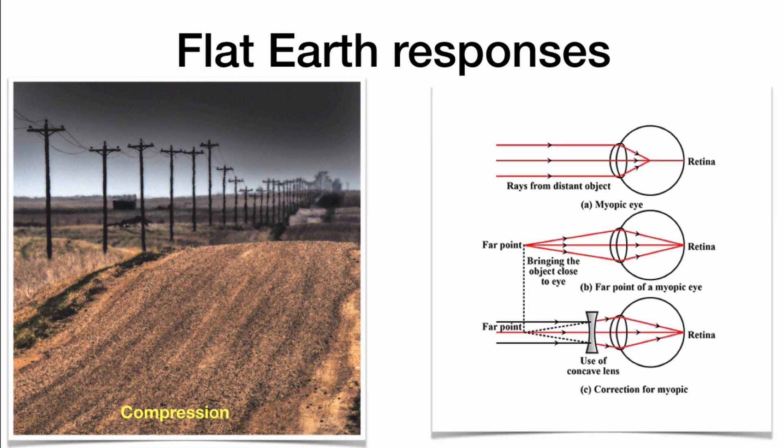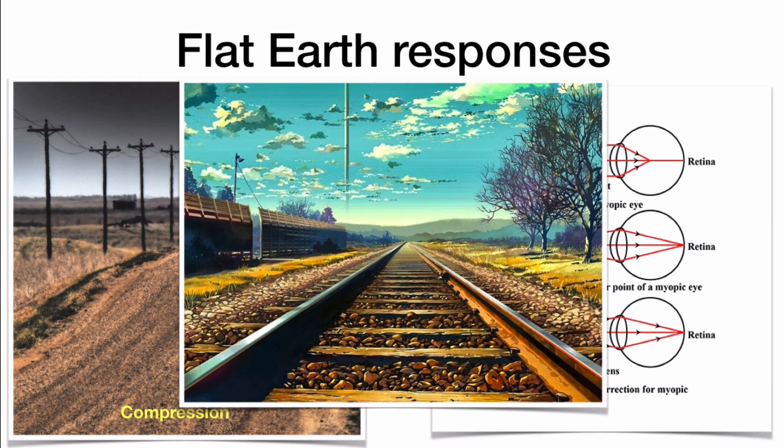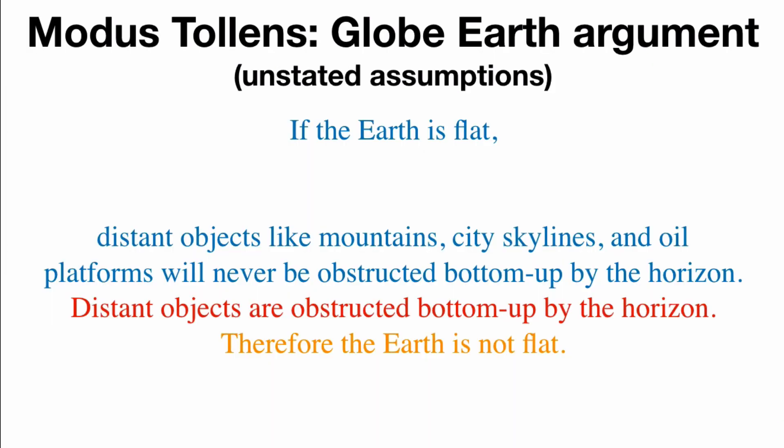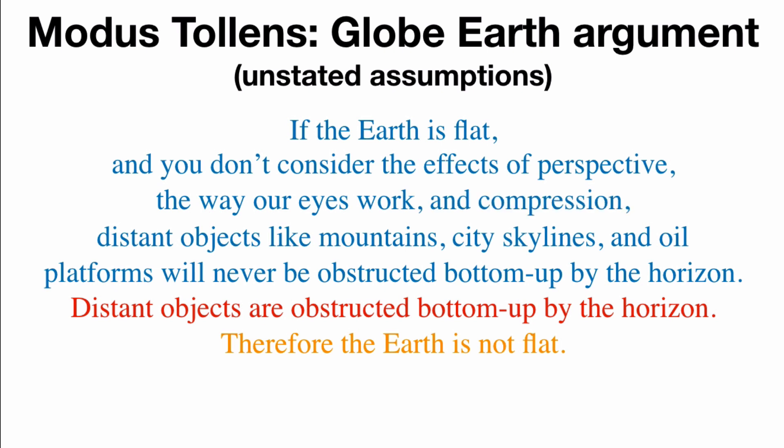And then of course, there's the various ways that the eye works. So you could talk about how images are formed using the human eye. And you can also talk about the rules of linear perspective with the vanishing point and the horizon line. So it turns out that there are some unstated assumptions for this version: if the earth is flat and you don't consider the effects of perspective and the way our eyes work and compression, well, then you might not have things obstructed bottom up.